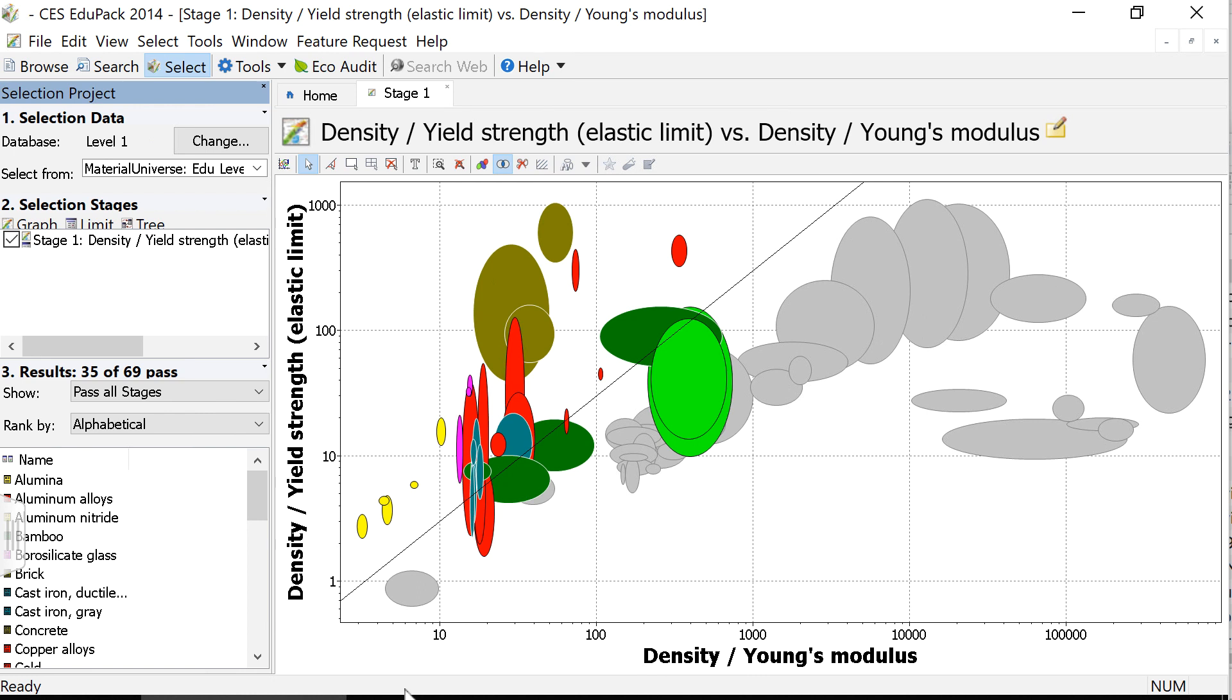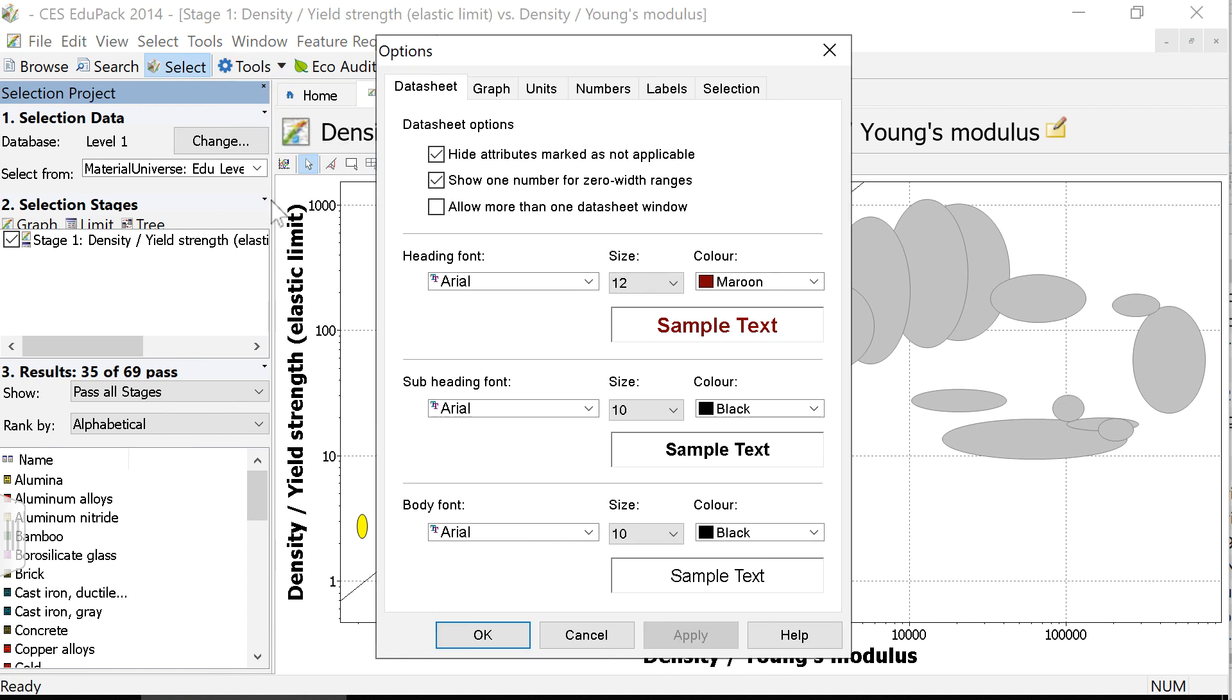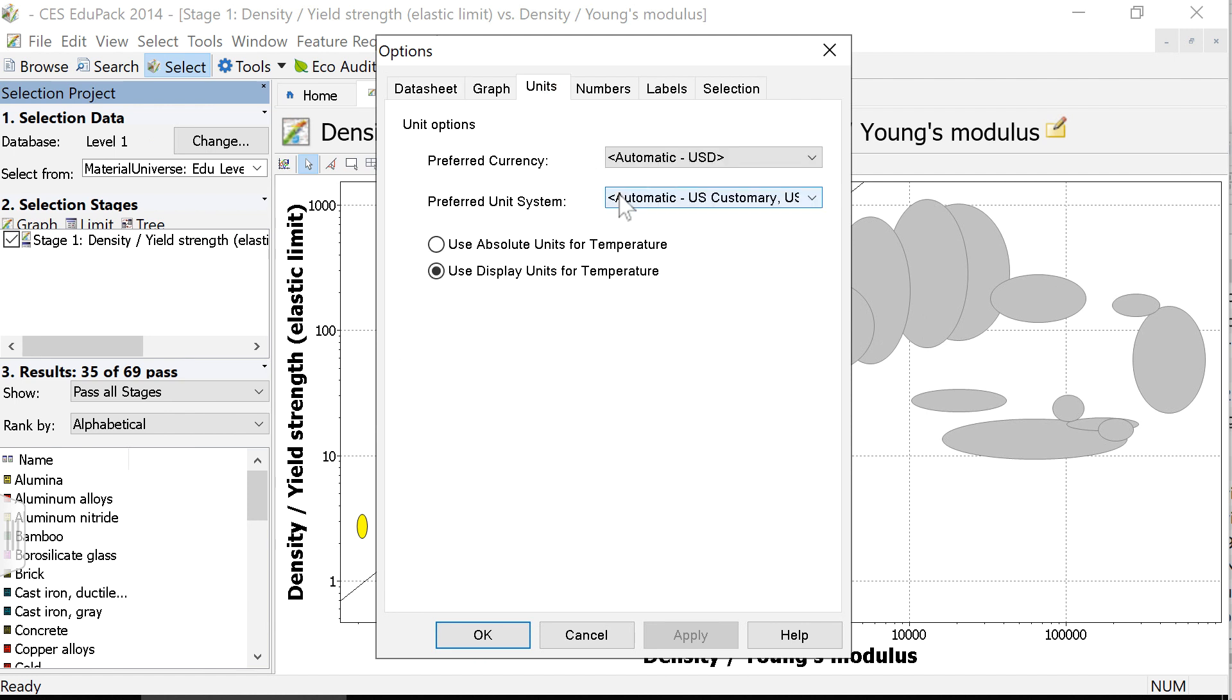The first step is that I need to make sure that the units of my graph match the units that I was calculating my coupling constant for. Our coupling constant was calculated using units like newtons and pascals, so now we want to make sure our axes have these units. To do this, we'll go up to Tools, select Options, and now we can go to Units. I'm going to specifically select the units of SI Consistent, and we'll apply those.